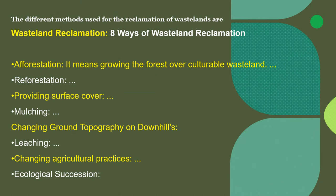There are eight ways to convert wasteland into usable or cultivable lands. The eight methods of wasteland reclamation are: afforestation, reforestation, providing surface cover, mulching, changing ground topography on downhills, leaching, changing agricultural practices, and ecological succession.